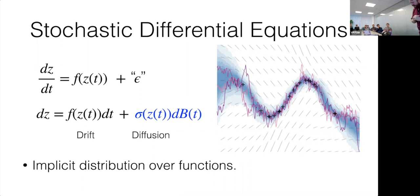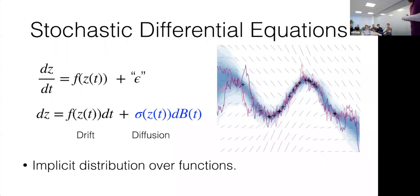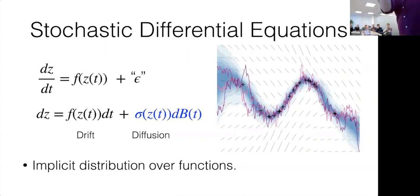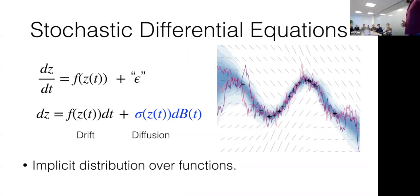One concern is: if I have fixed noise, does that limit my marginals to being spread out? That's not the case. Even with fixed noise, I can steer the drift to squish the mass as tightly as I want, so I can have arbitrarily tight marginals even with a fixed amount of diffusion.